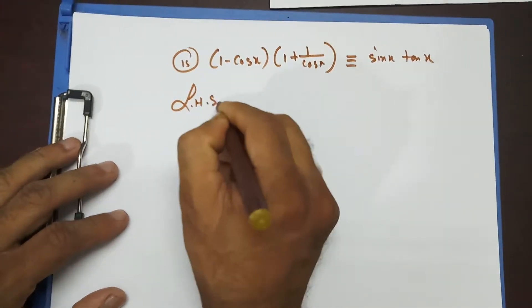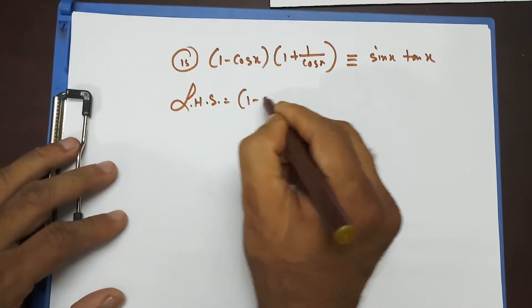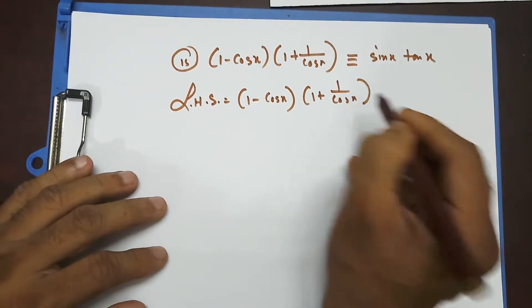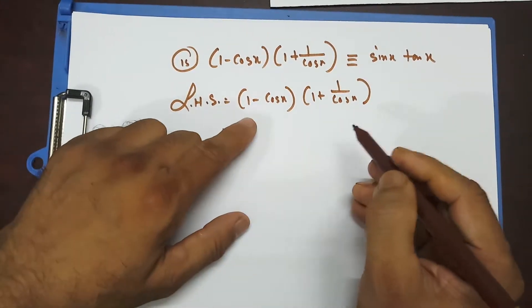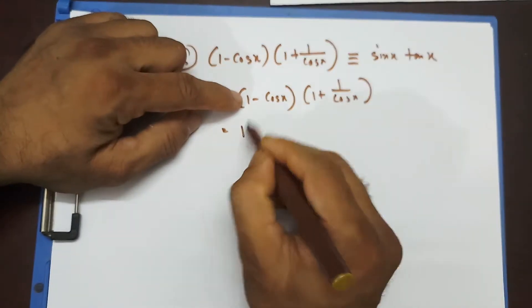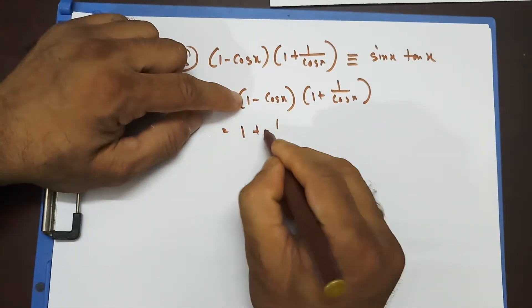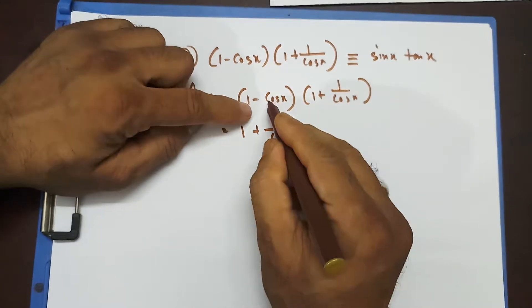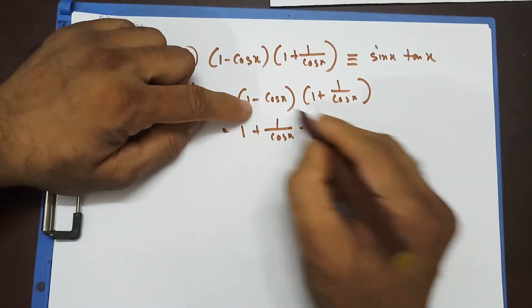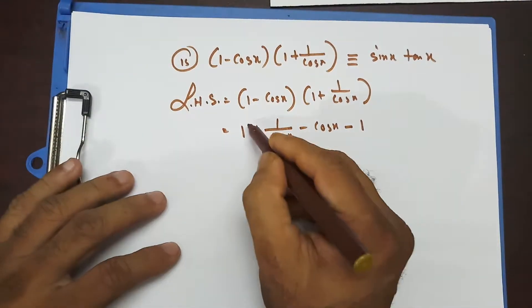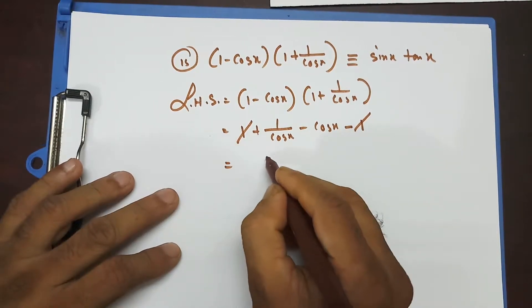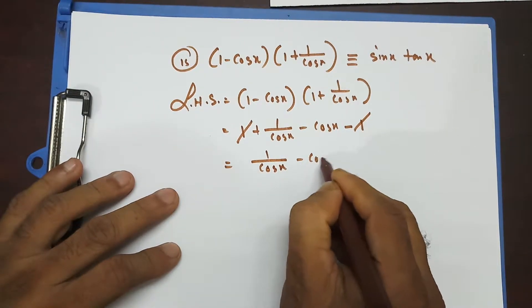Starting from the left hand side: (1 minus cosx)(1 plus 1/cosx). The simplest thing I can do is multiply it out. 1 times 1 is 1, 1 times 1/cosx is 1/cosx, minus cosx times 1 is minus cosx, and minus cosx times 1/cosx — the cosx cancels out — gives minus 1. So this 1 and minus 1 cancel out.